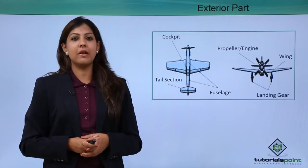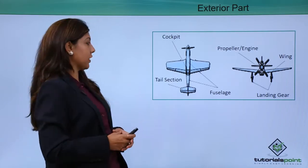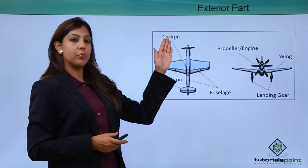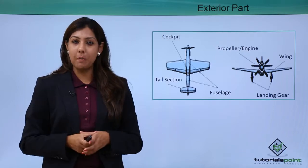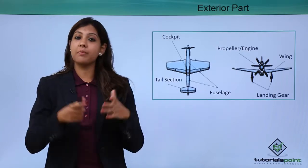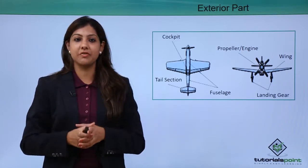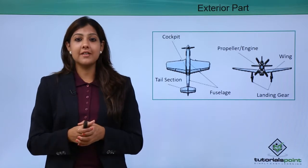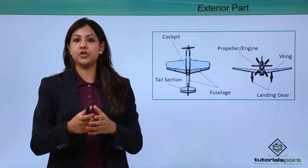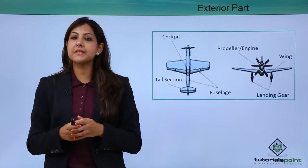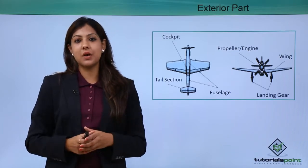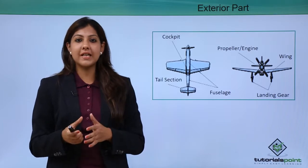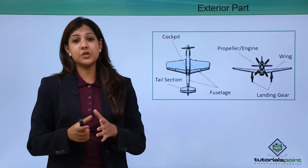Let's look at the exterior part of the aircraft. We have the tail section, which helps in the left and right movement of the aircraft. We have the cockpit right in the front where the pilot and co-pilot sit. The fuselage is the body of the aircraft from front to back. Depending on the type of aircraft, you have propellers or engines. We also have the landing gear, which helps during landing, and the wings, which help in left or right movement and yawing.